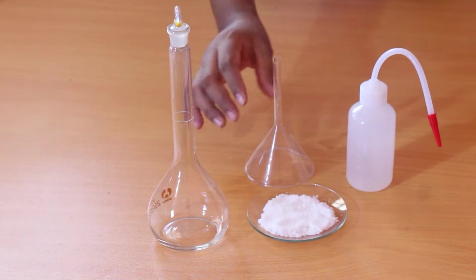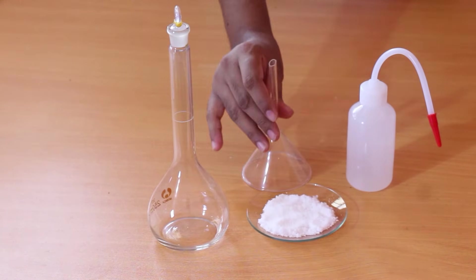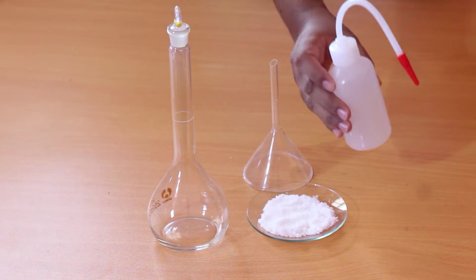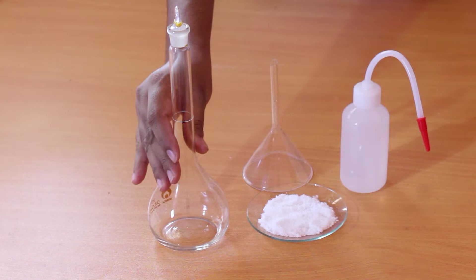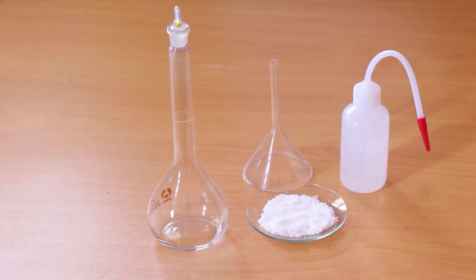Here we have a funnel, a wash bottle, and a volumetric flask. This volumetric flask is marked as 250 milliliters. So this 250 milliliters is equivalent to 250 cubic centimeters.